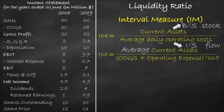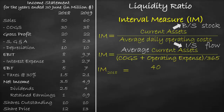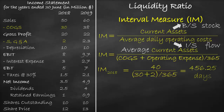Now let's calculate the interval measure for the year 2018. Let's look at the balance sheet for current assets. Please note 2018 is the first year of operations; consequently, we do not have the average of the current assets as we do not have the previous year. We have current assets in 2018 of $40 million. So current assets of $40 million divided by cost of goods sold of $30 million plus selling, general, and administration expenses of $2 million, divided by 365, equals 456.25 days.